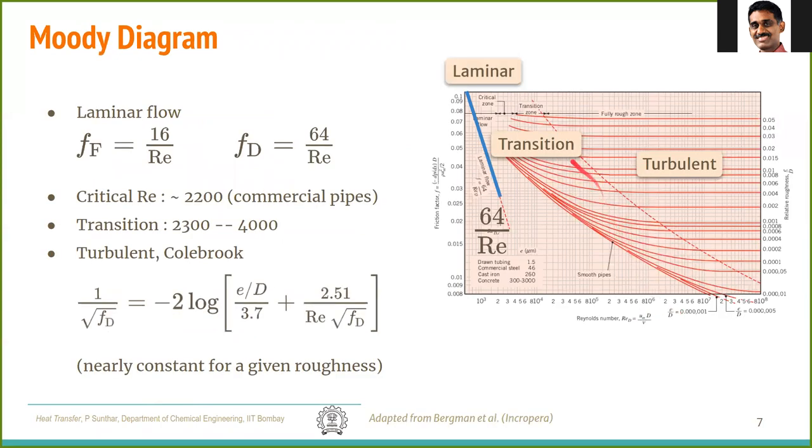So when you are using charts or tables, you need to make sure what is reported there, whether it is Darcy or Fanning. For laminar flow, the Fanning friction factor goes as 16 by Re, and by the relation which we saw, the Darcy friction factor is 4 times that, which is 64 by Re. So here, the Darcy friction factor is plotted as a function of Reynolds number in a log-log scale. So 1 by Re in a log-log scale will go as a straight line decreasing in Re.